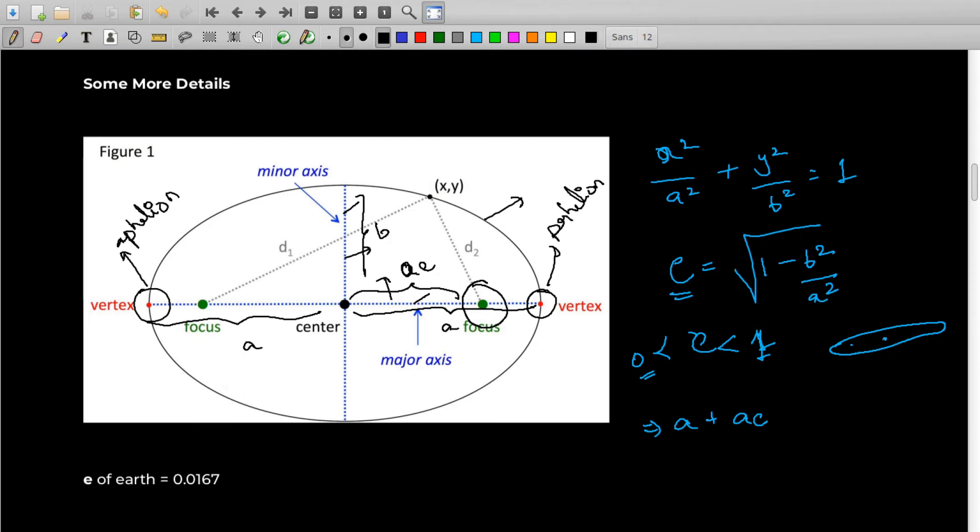The semi-major axis multiplied by its eccentricity. So at the aphelion position, this is the distance between the planet and the Sun, and at the perihelion position, as you can see, it's a minus ae. These two points I wanted to tell you.